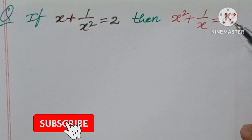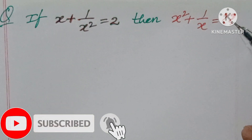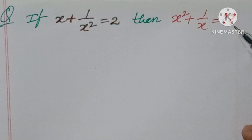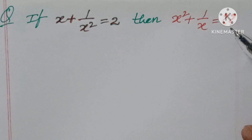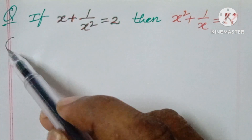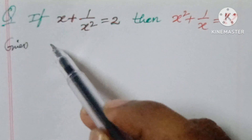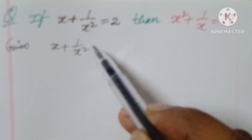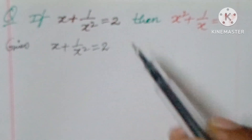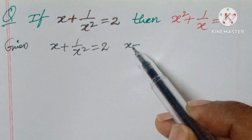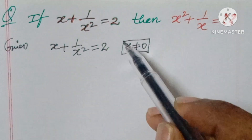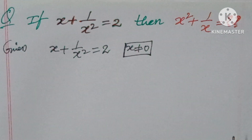If you are new to the channel, please subscribe and give it a thumbs up. More than 500 aptitude and logical problems are uploaded in this channel — please go through them. So, what is given: x plus 1 by x squared is equal to 2, where x cannot be equal to 0.